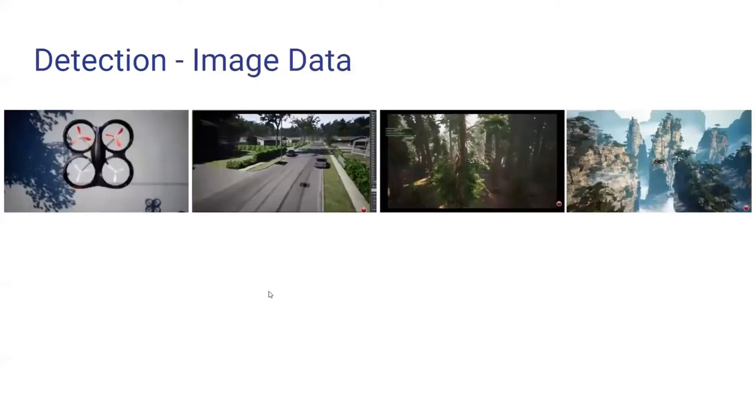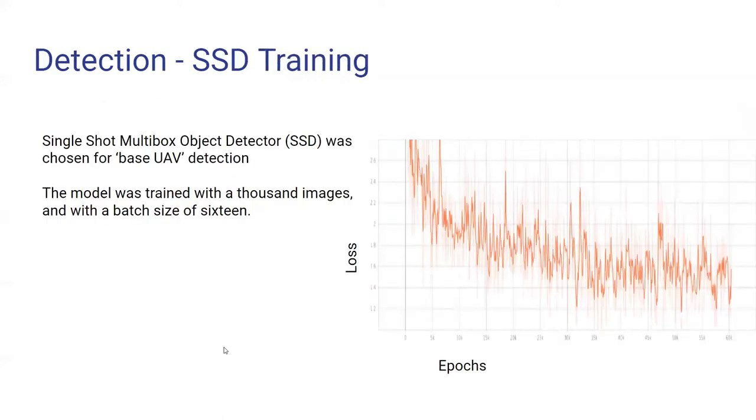For the detection, to detect the base UAV, we have created an image dataset of base UAV by making the base UAV navigate an environment and also collecting some information from internet videos as well. We created a dataset containing a thousand images and we trained this neural network with these images, a special type of convolutional neural network called the SSD, which means single shot multi-box object detector. We have tried this network with a batch size of 16 with all of the dataset and we have observed that it took around 60 epochs to converge and to perform well.